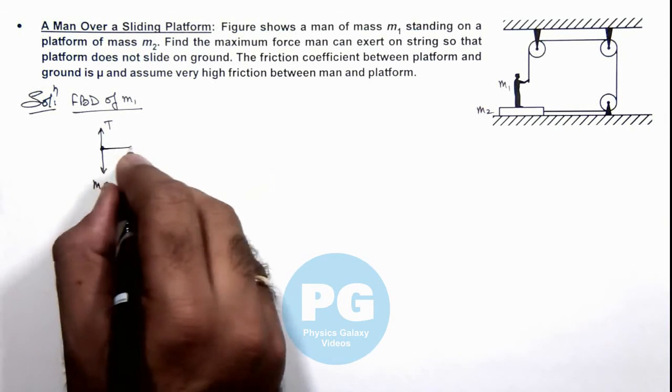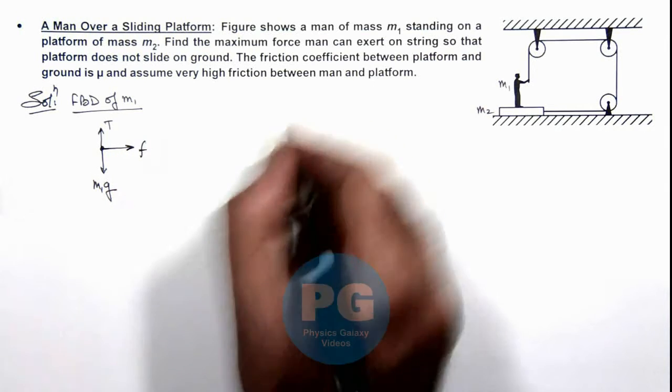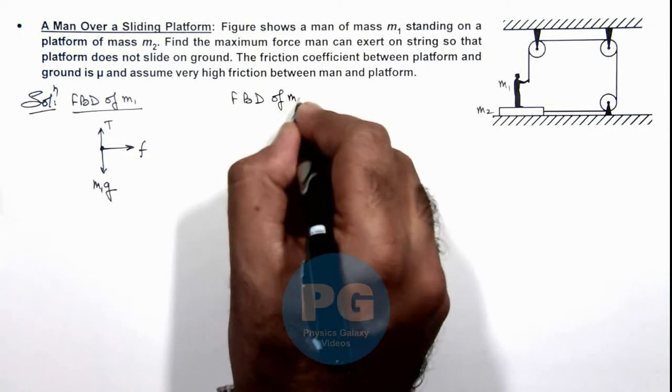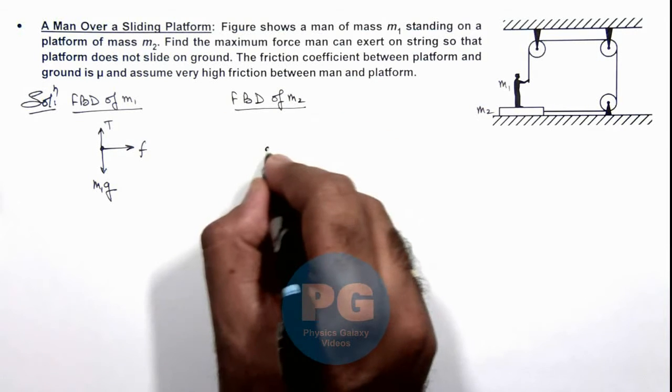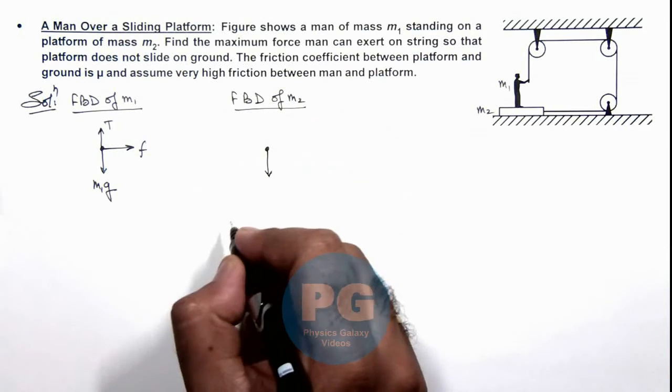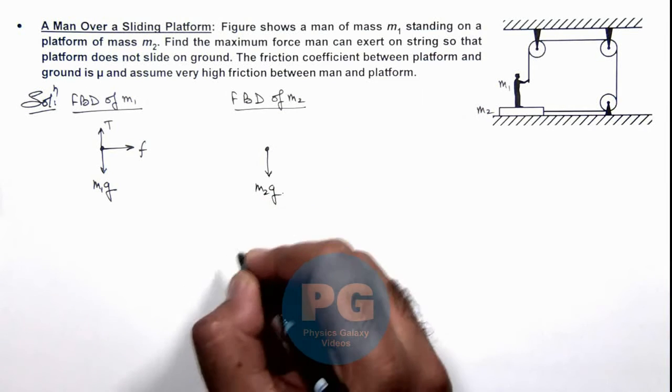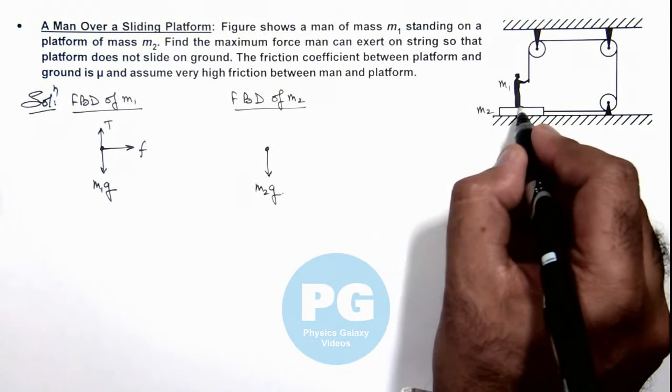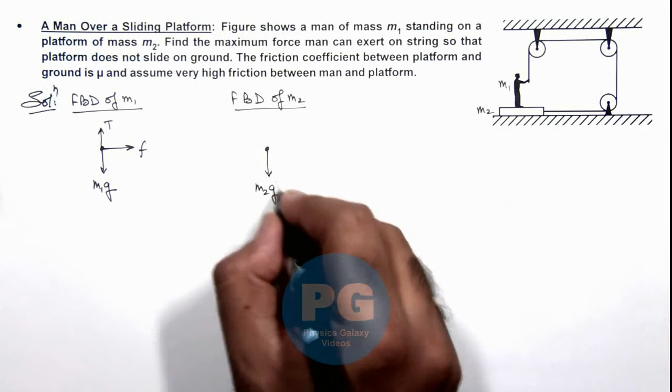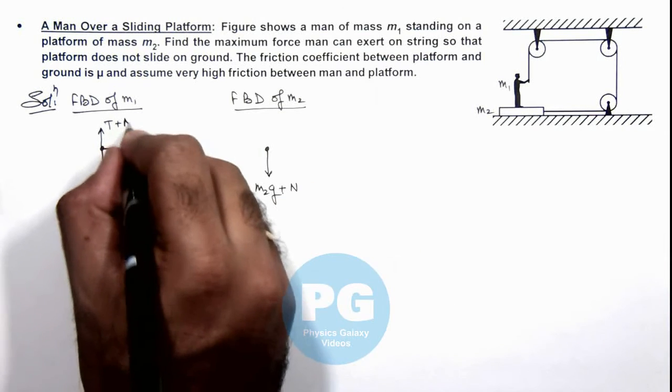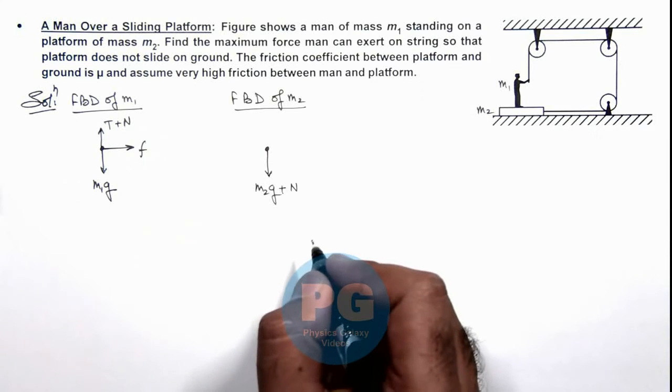If we draw the free body diagram of the platform of mass m2, it will experience a weight m2g in the downward direction. Due to the contact between man and platform, the platform will experience a normal reaction downward and the man will experience a normal reaction in the upward direction.